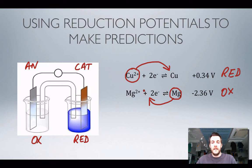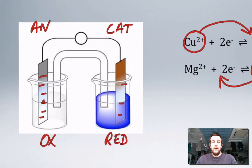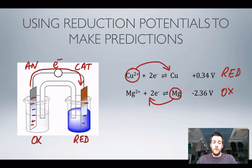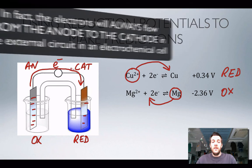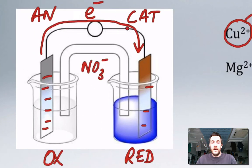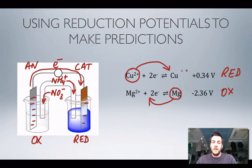Because the magnesium electrode is better at giving up electrons, there will be more electrons on it, making it the negative electrode. Electrons always flow from where there are lots of them to where there are fewer, so the flow of electrons in the external circuit is from the magnesium to the copper. If we have ammonium nitrate in the salt bridge, the nitrate ions flow in the same direction as the electrons — continuing the flow of negative charge — while the positive ammonium ions flow in the opposite direction.